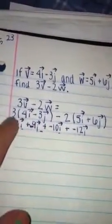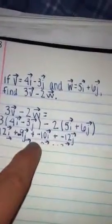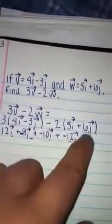3 times 4 vector i is 12 vector i. 3 times negative 3 vector j is negative 9 vector j. Now we're going to distribute the negative 2 into the 5 and the 6. So negative 2 times 5 vector i is negative 10 vector i, and negative 2 times 6 vector j is negative 12 vector j. Now we're going to combine like terms.